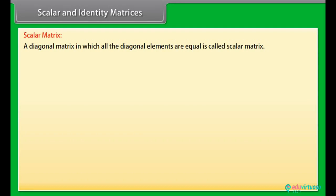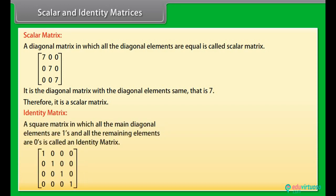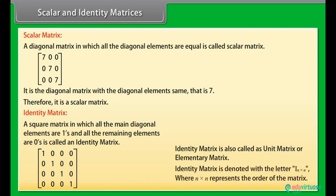Scalar matrix: A diagonal matrix in which all the diagonal elements are equal is called a scalar matrix. Identity matrix: A square matrix in which all the main diagonal elements are ones and all the remaining elements are zeros is called an identity matrix. It is also called a unit matrix or elementary matrix, and is denoted by Iₙ where n represents the order.